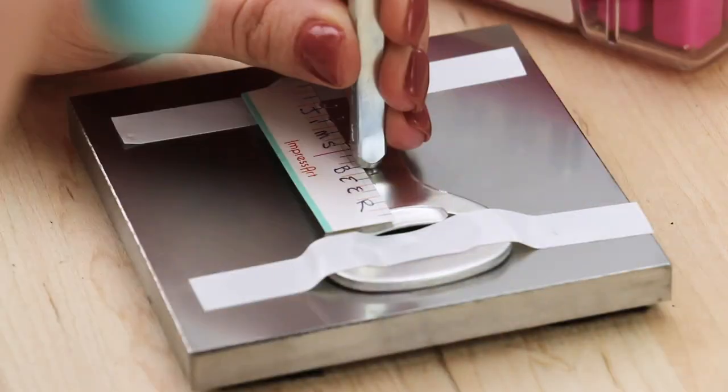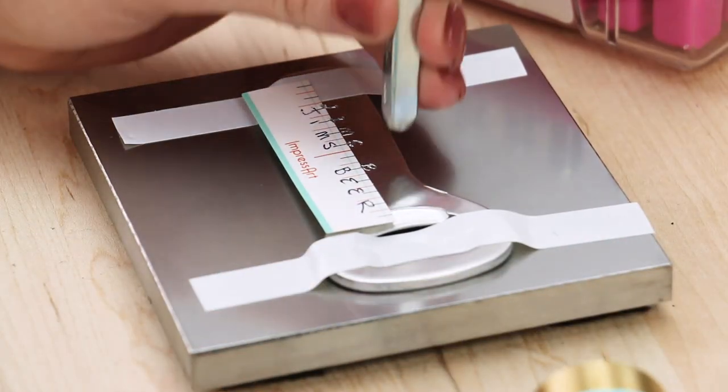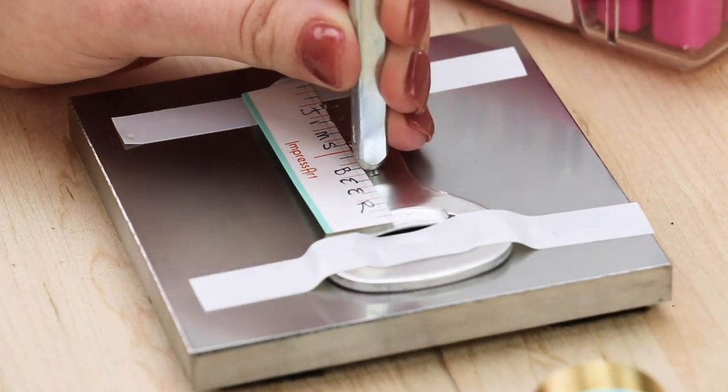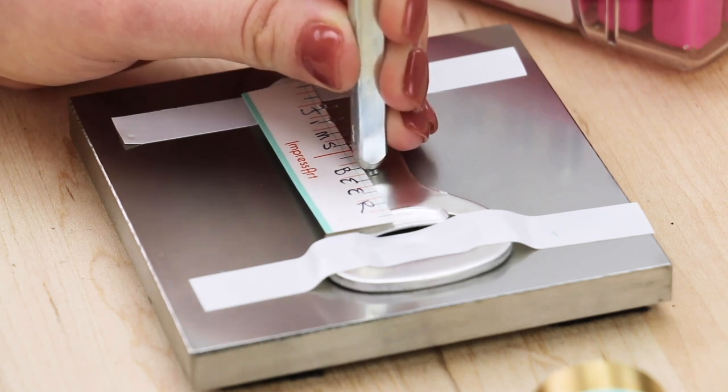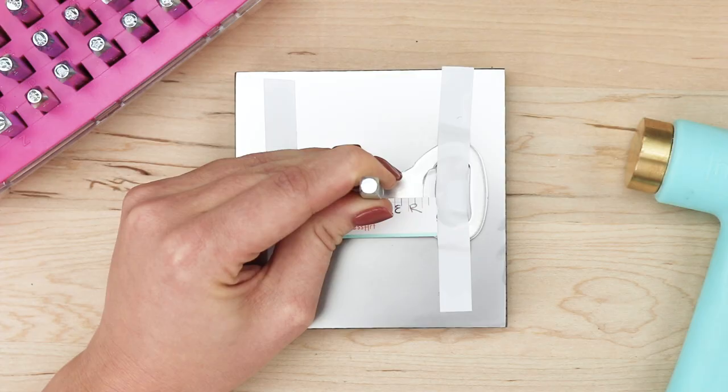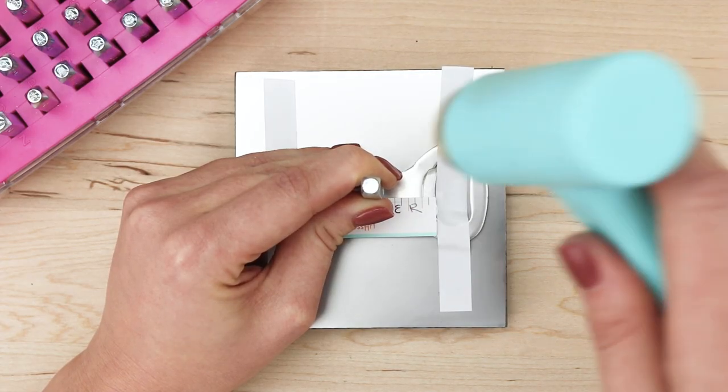Ideally, you would only want to hit the stamp once. But if you do get a half impression or a shallow impression, you can go back in and hit the stamp one more time. Wiggle the stamp until it catches into the groove of the impression and locks into place, then give it one more hit.